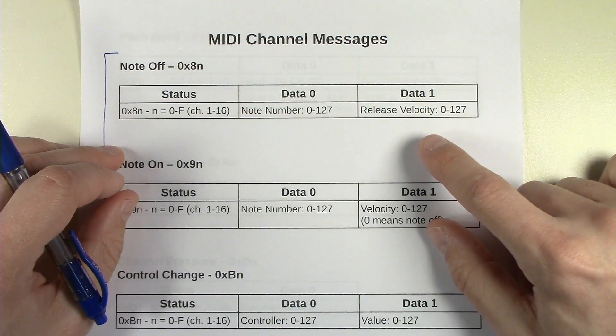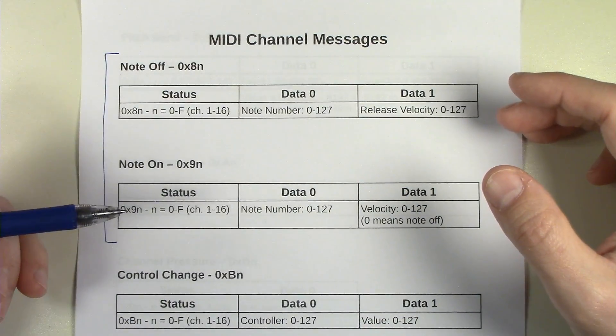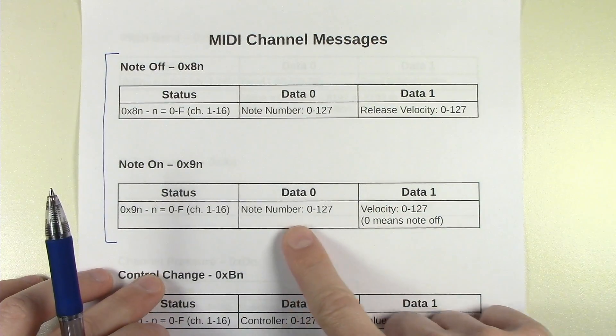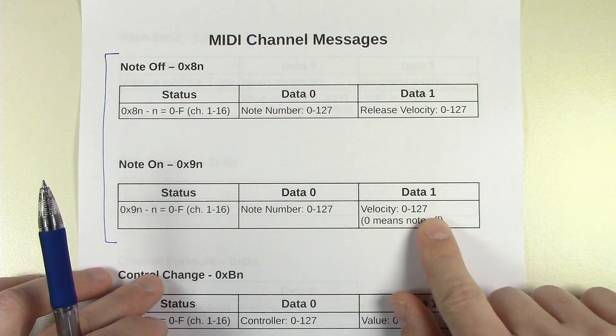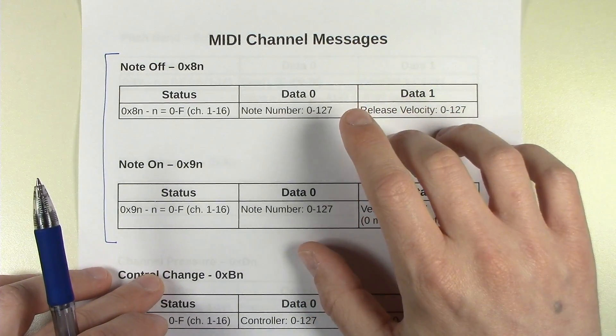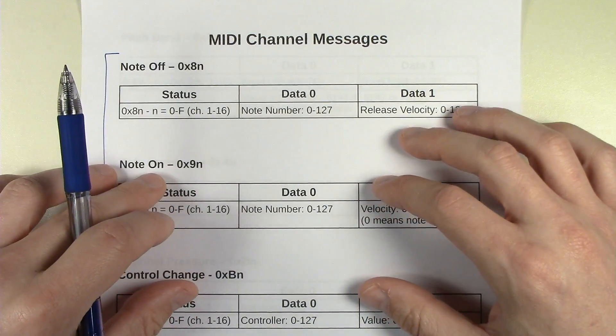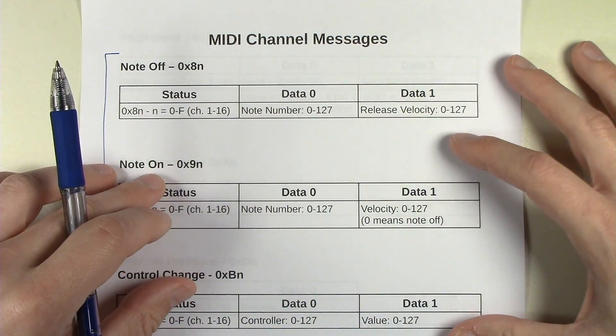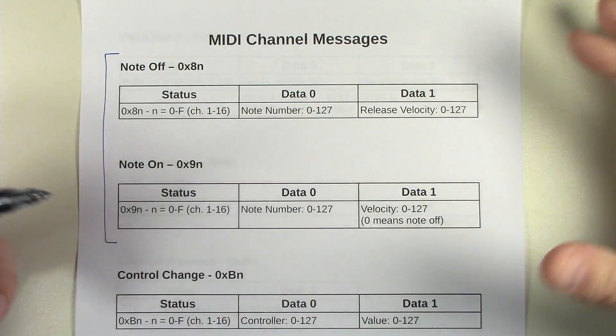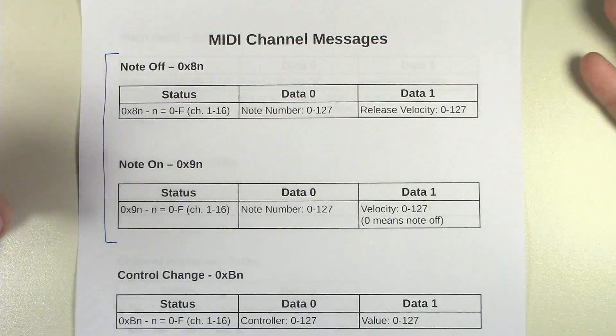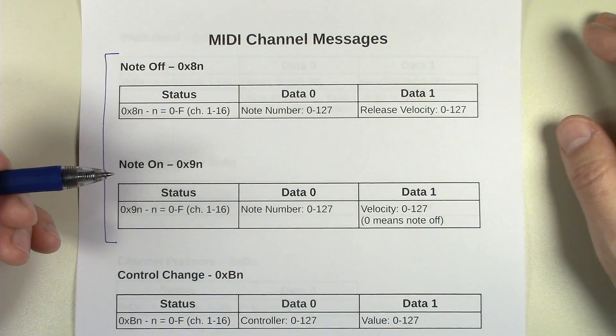Note On basically has the note number, and then it has a velocity. And velocity is how hard you hit the key on your keyboard. Velocity of zero has a special meaning. It means actually note off because zero is like no velocity. That doesn't make any sense.